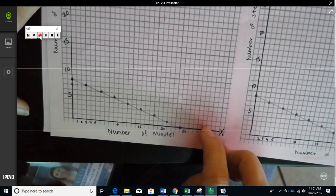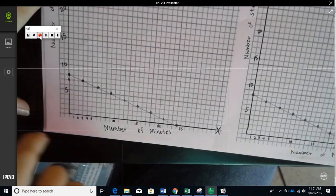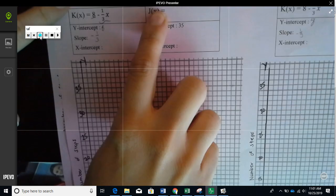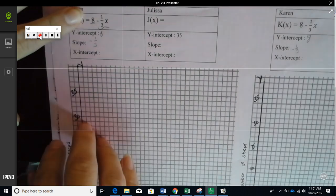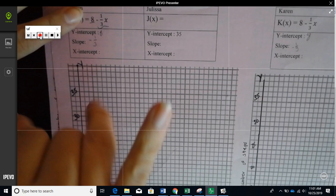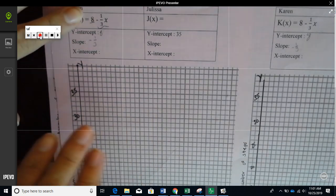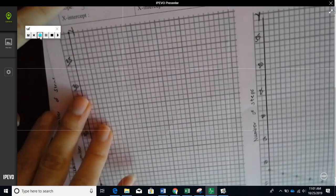After you have both graphs, what you're going to do is make a new graph for Julissa. In the original problem, Julissa wins, and what we're going to do on all of these graphs is manipulate the y-intercept and the slope so that the winner is always Karen.